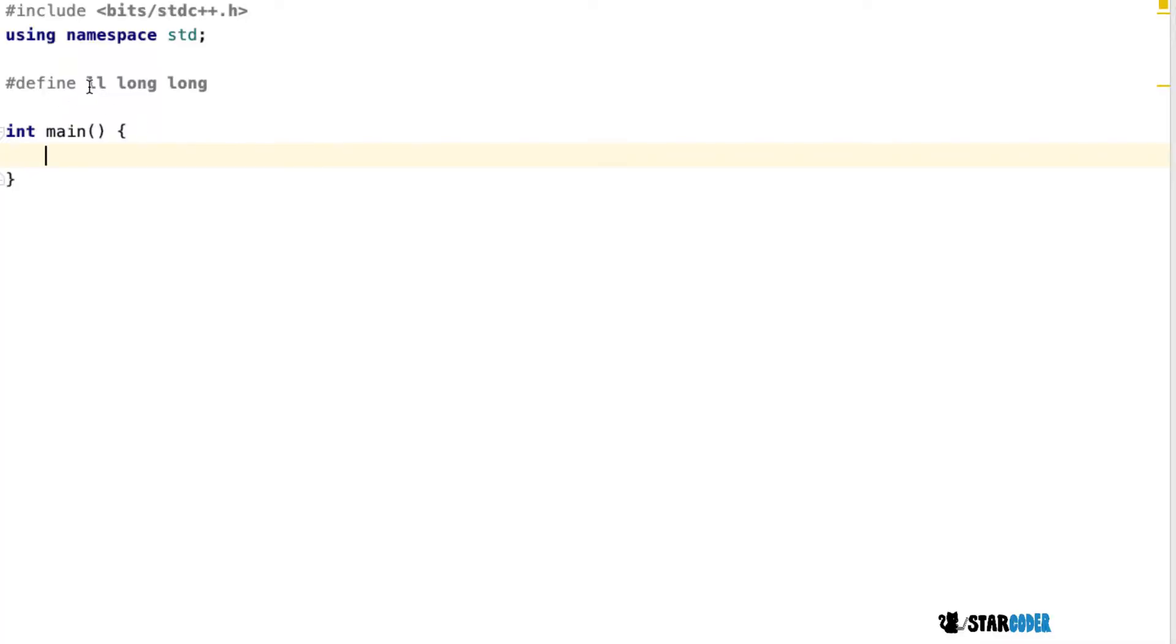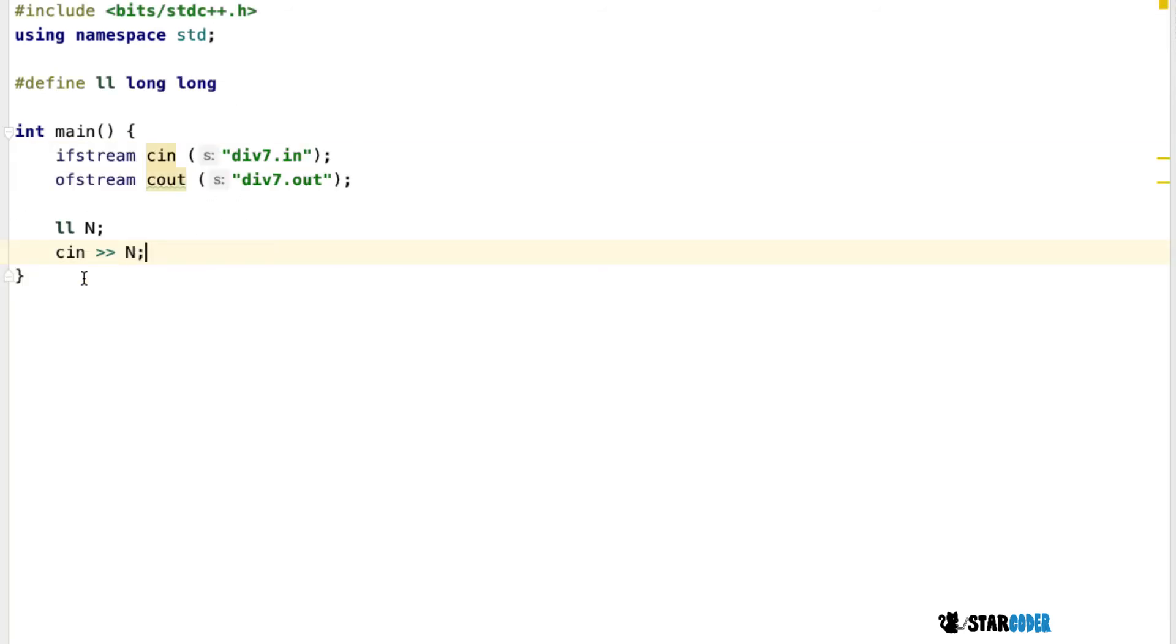So I've defined ll as long long in my code, which basically means if you see the words ll anywhere, it means long long. The first thing we're going to do is read in our input. And once we've done that, we're going to create our prefix sum.